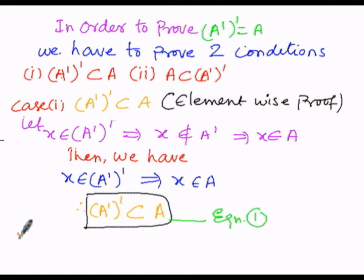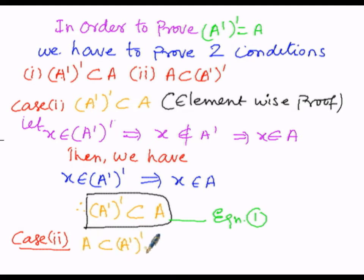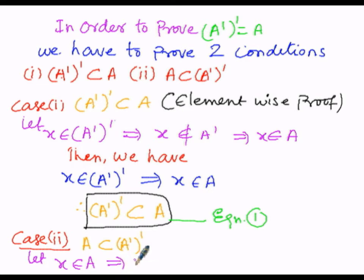Now let us go to Case 2. In Case 2 we have to prove the reverse: A must be a subset of (A')'. Since we are performing this proof by element-wise method, we assume an element x belonging to the LHS, that is x ∈ A. When x belongs to A, if instead of A we write A complement, then belongs to becomes does not belong to — so x does not belong to A'.